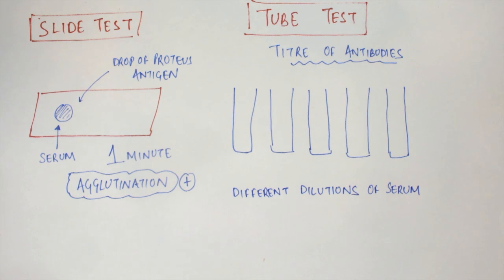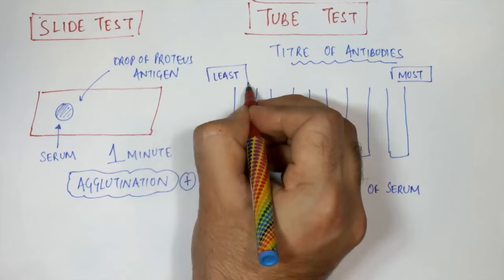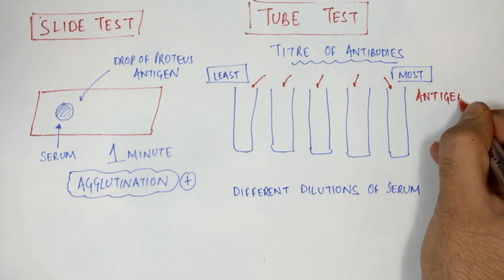Suppose this is the test tube with the least diluted serum and this is the test tube with the most diluted serum. Next we put a drop of Proteus antigen into each of the test tubes.